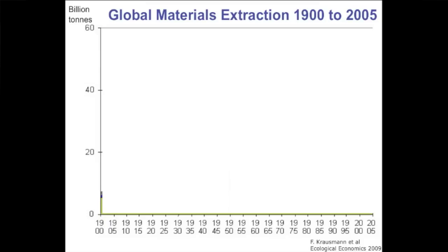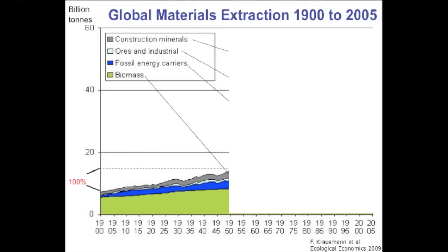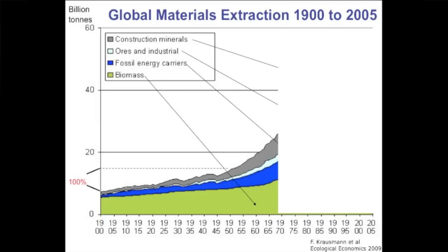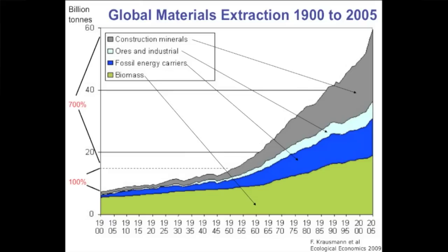Now let's look at some data — first, all of the materials that our economy, looking at the world, has required over the last century or so. In the first half of the 20th century there was a steady increase in the extraction of materials: construction minerals, ores and industrial materials, fossil energy carriers, and biomass. But in the second half of the 20th century there is an absolutely massive increase in the amount of materials and energy used to drive the world's economy. Anyone looking at this graph would have to ask: how much longer can that continue?